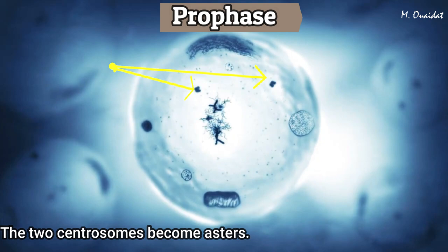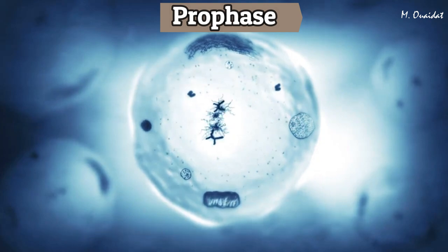The two centrosomes become asters, between which a spindle fiber is formed.